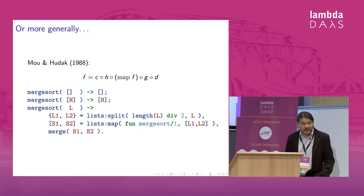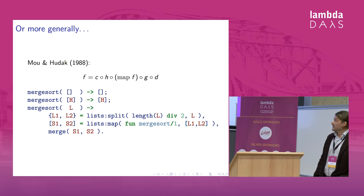So for instance if I rewrite my merge sort to use a list map, I have the same effect, but now it's more clearly of the same structure as this definition. So we would like to identify algorithms which behave like this.